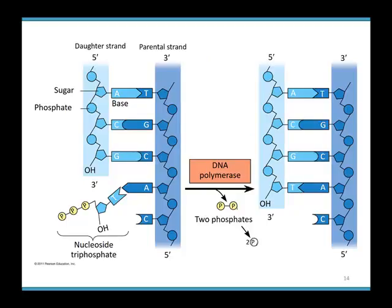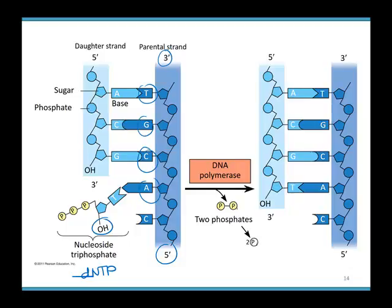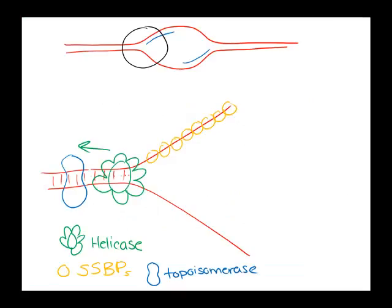The parent strand runs 3' to 5' from top to bottom, with sequence C, G, T, G, C, A. Our daughter strand is made from the 5' end down to the 3' end, with DNA polymerase adding nucleotides to the 3' hydroxyl. Because helicase is moving to the left, the top parent strand runs 3' on the right and 5' on the left; on the other side, where there's a 3' there's a 5' — DNA is antiparallel.